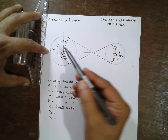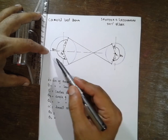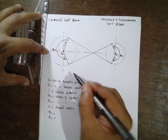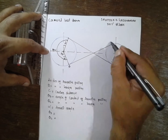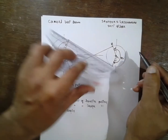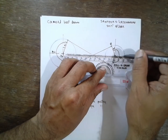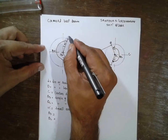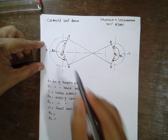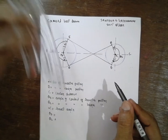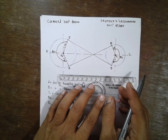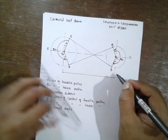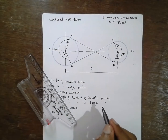What is thetaL? It is the angle of contact of the larger pulley. ThetaS is the angle of contact of the smaller pulley. I name the points A, B, C, D, E, F and back to A. The center distance between both the shafts will be capital C.